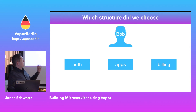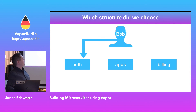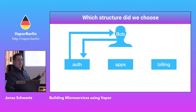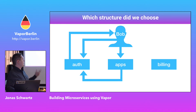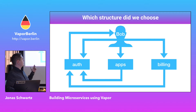Just to show how we have structured things, I have three microservices: auth, apps, and billing. Bob starts by contacting auth. He gets a token back from auth — a token identifiable to him. He contacts apps. Apps will contact auth, make sure the token is valid, and get a response confirming he has access. If he tries to contact billing, it will again contact auth, verify his permissions, and return the data to Bob.